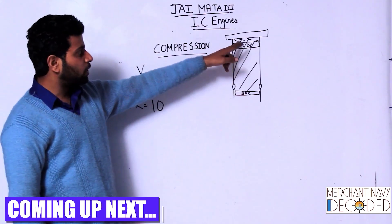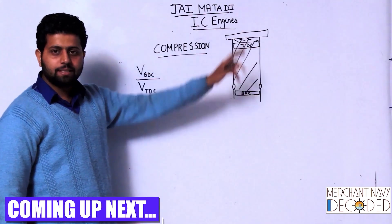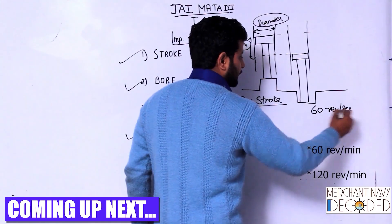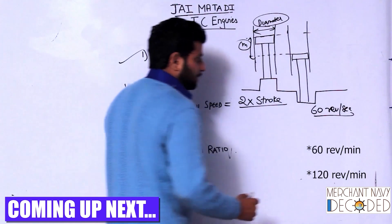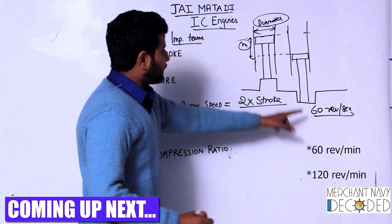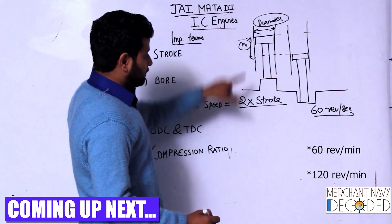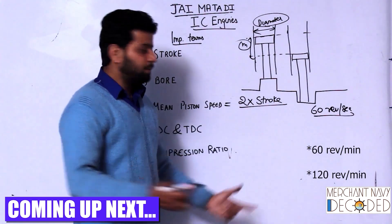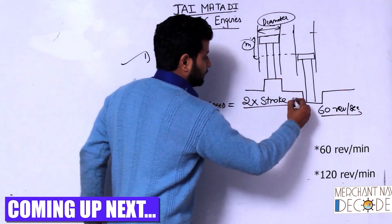Can you please tell me the volume when the piston is at TDC? Revolutions per second — that means in one second it is traveling twice the stroke. So that will be its speed.